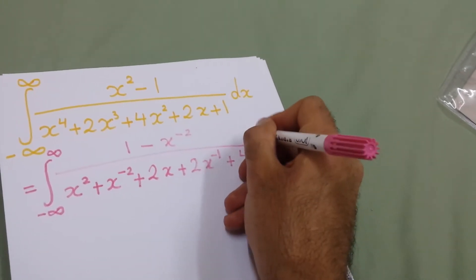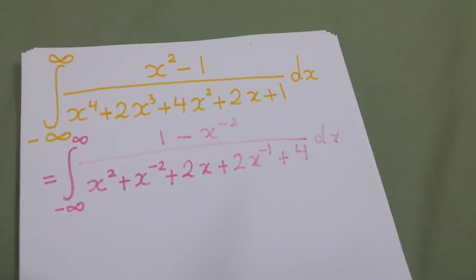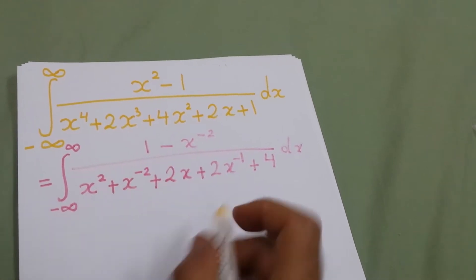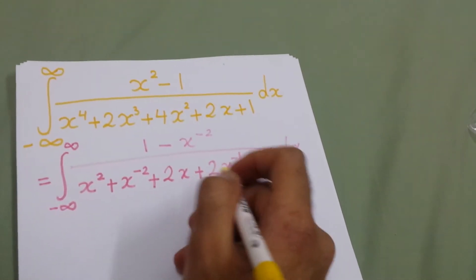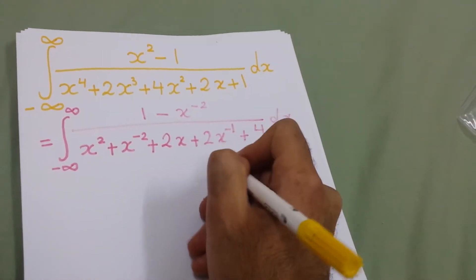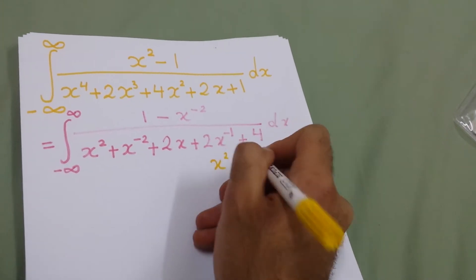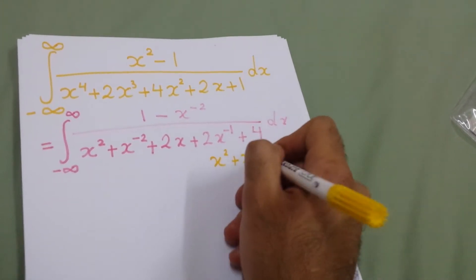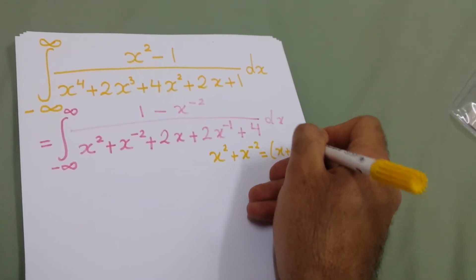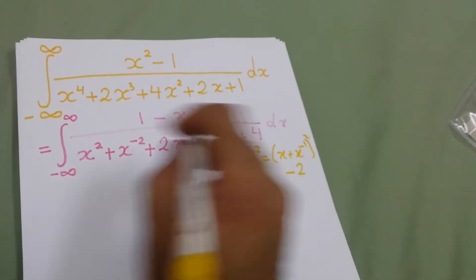The denominator will be 1 minus x to the power minus 2 dx. Now what we will do is write x squared plus x to the power minus 2 in terms of x plus x to the power minus 1. We know that x squared plus x to the power minus 2 equals x plus x to the power minus 1, squared, minus 2.